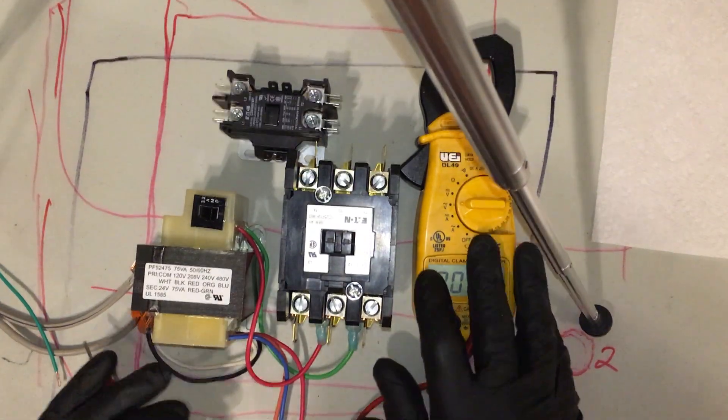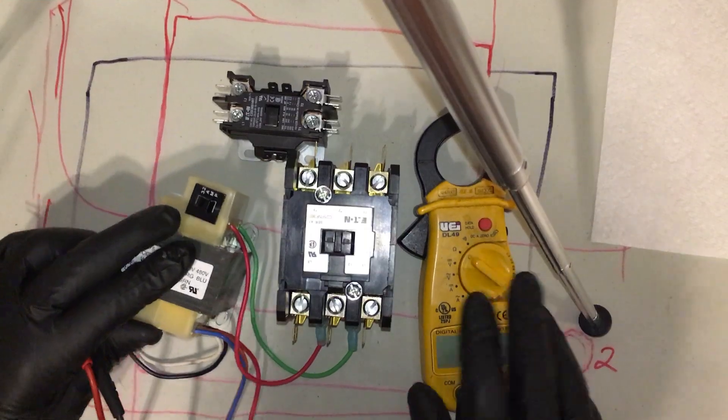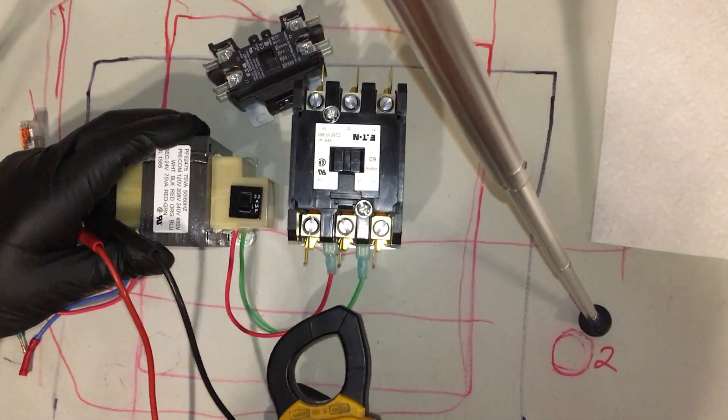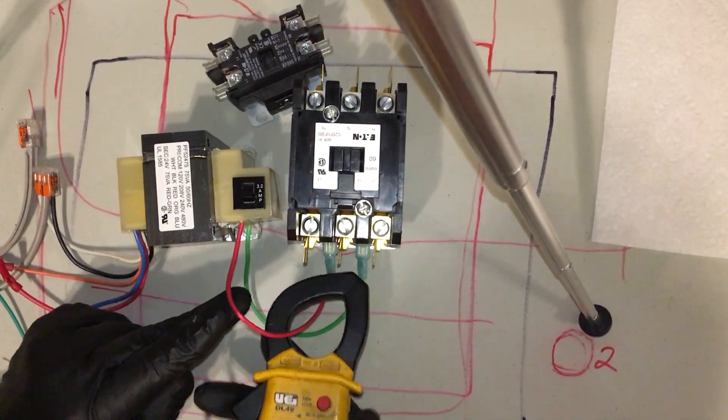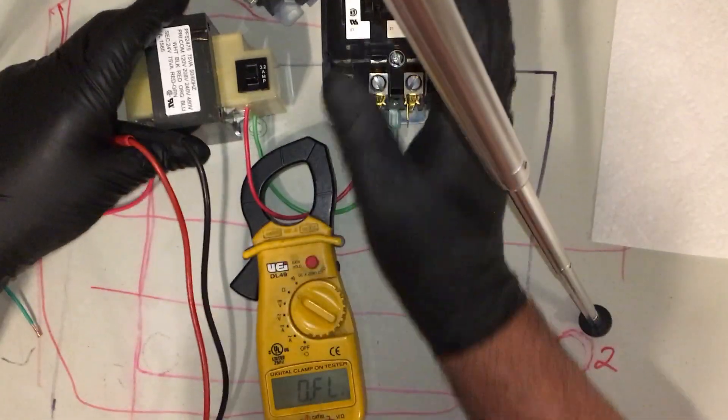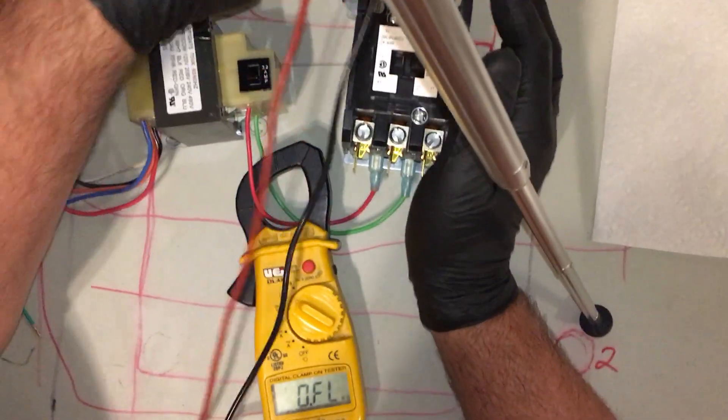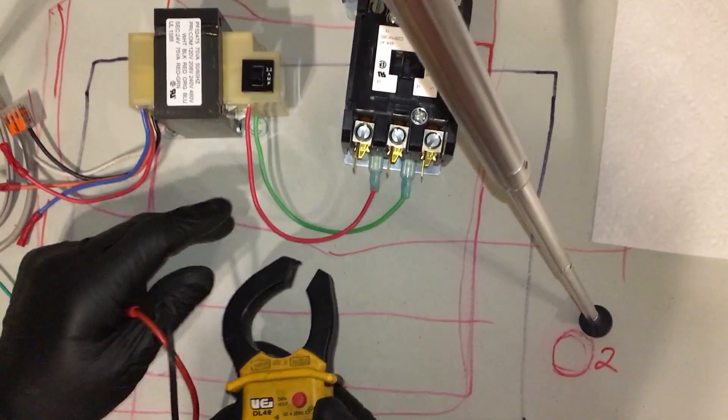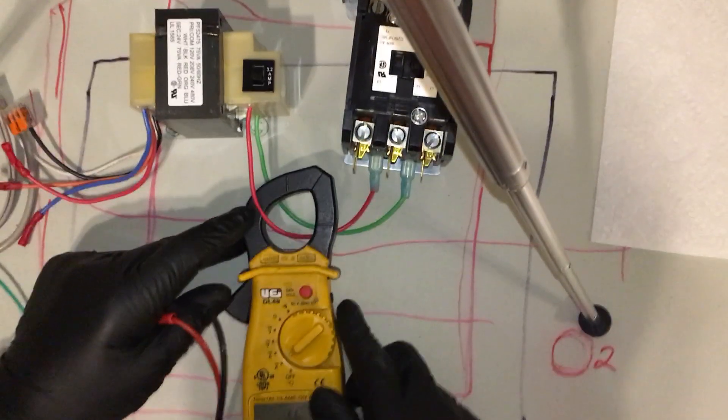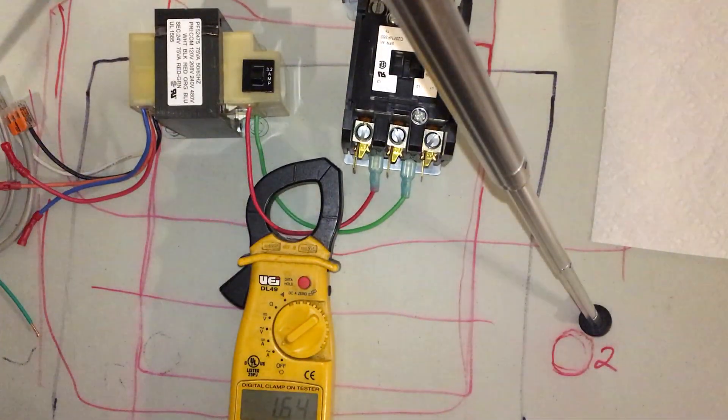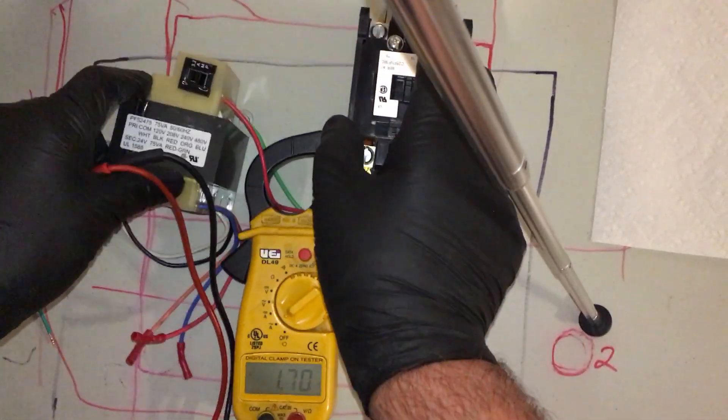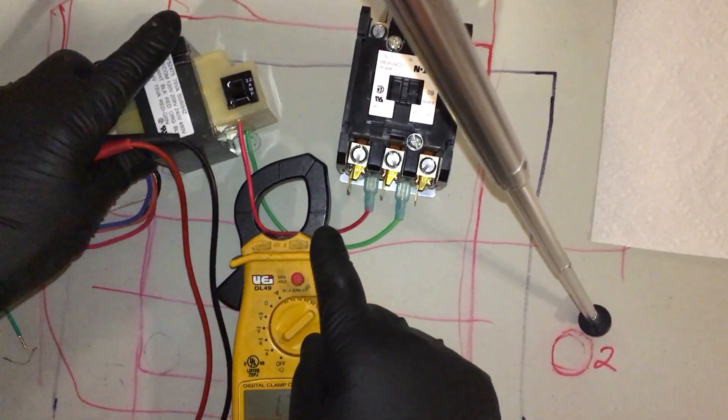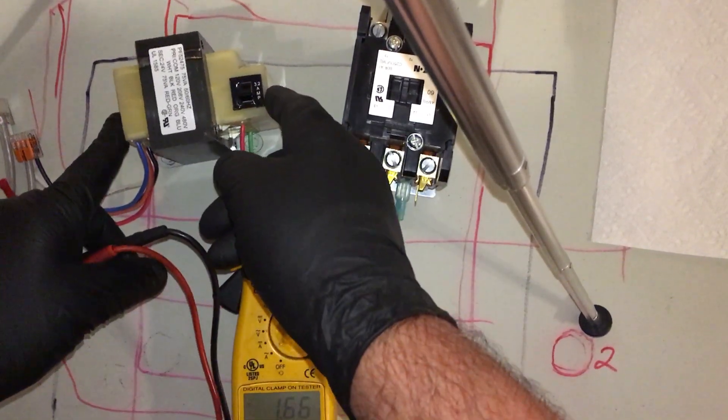We have 25 and a half volts under load right now. Let's check our amps. Let's put our amp clamp around the transformer, the 24 volt side, and see what we're drawing. Let's go to amps AC. We're drawing 1.6, 1.7 amps on the 24 volt side. Your fuse pops at 3.2 amps.